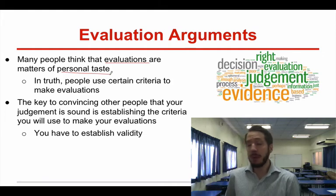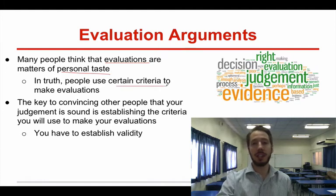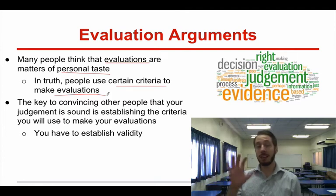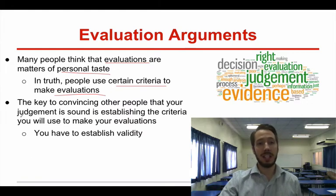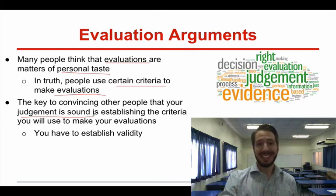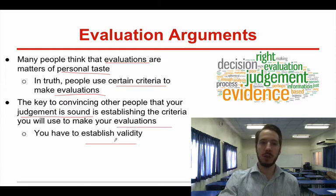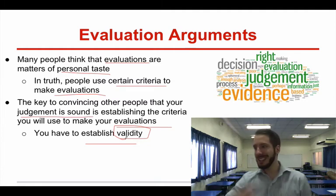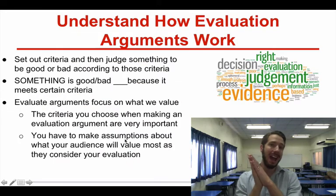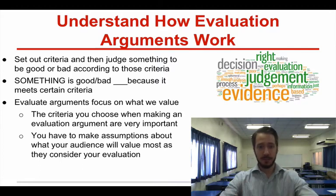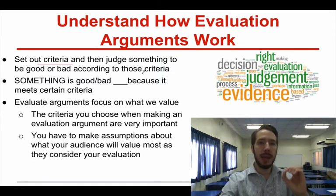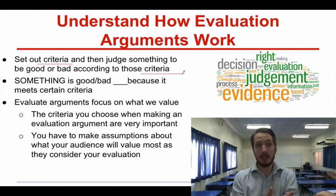In any particular case, people use certain criteria to make evaluations of things — whether they're good or bad. To make an effective evaluation argument, you have to convince other people that the criteria you're using is valid, which will make your judgment sound. The evaluations you make and the criteria you use have to establish validity. The core of your argument is that the criteria you're using to evaluate if something is good or bad is credible. When you're researching, set out the criteria you're using to establish if something is good or bad, and then make the case that that criteria is effective in evaluating this particular topic.